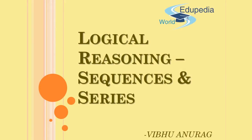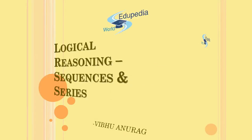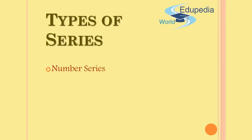Hi friends, welcome to our video from Edupedia World in our series on logical reasoning. The topic we will be covering today is sequences and series. There are primarily three types of series: number series, where you have numbers in order and must find the missing one; alphabet series, where you have letters; and mixed series, a combination of the two. In this video series we will look at examples of all three types and I will share techniques on how to attempt these questions.